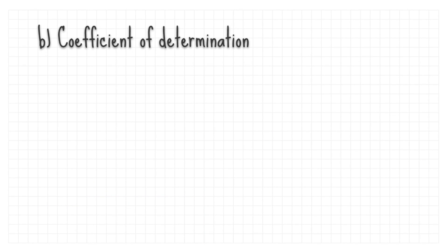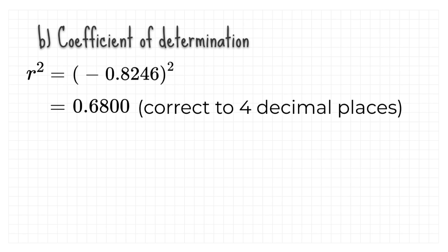B. Let's find coefficient of determination. All you have to do is to square your r. So, square negative 0.8246 is 0.6800 correct to 4 decimal places.